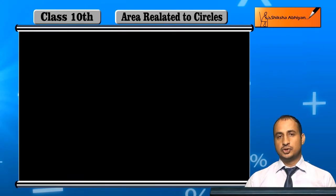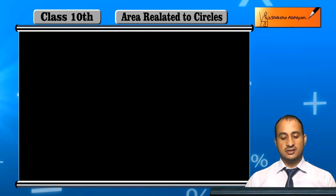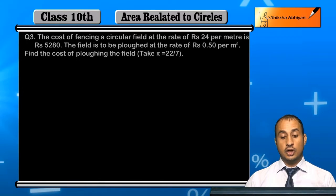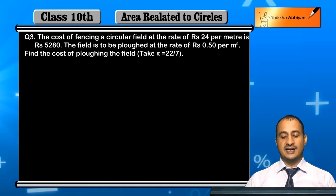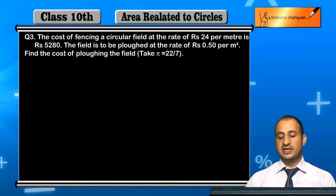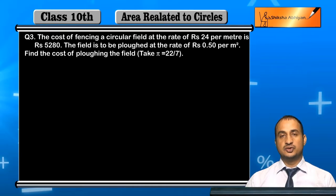Now students, see Question 3. The cost of fencing a circular field at the rate of Rs 24 per meter is Rs 5,208.